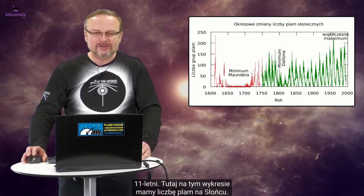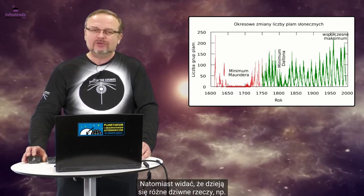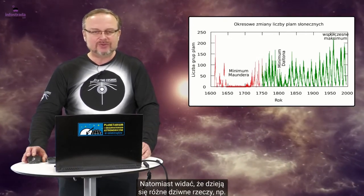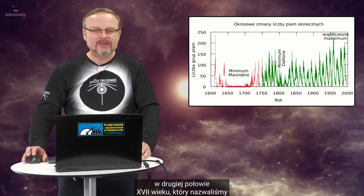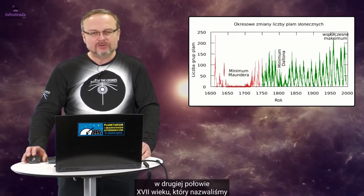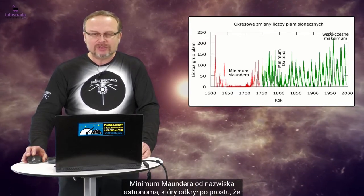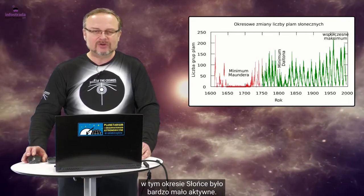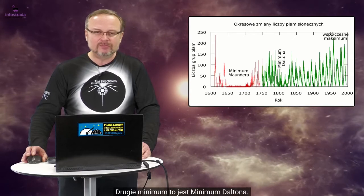Tutaj na tym wykresie oczywiście mamy liczbę plam na Słońcu, natomiast widać, że dzieją się różne dziwne rzeczy. Na przykład mamy zaznaczony taki okres w drugiej połowie XVII wieku, który nazwaliśmy minimum Maundera od nazwiska astronoma, który odkrył, że w tym okresie Słońce było bardzo mało aktywne. Drugie minimum to jest minimum Daltona.